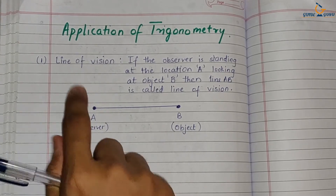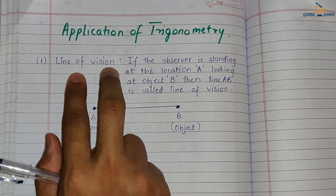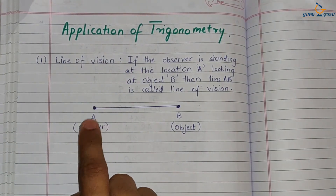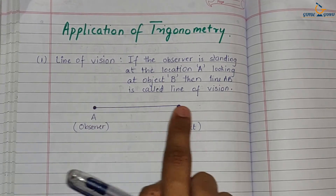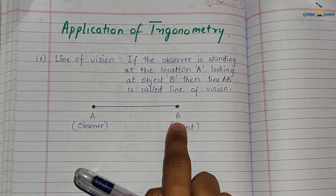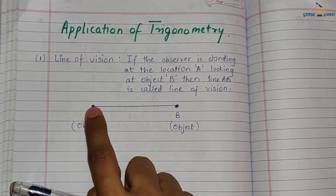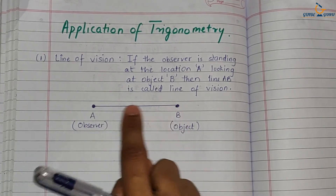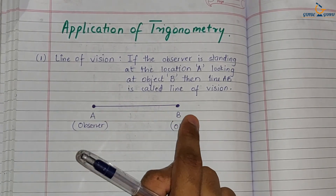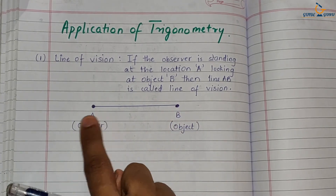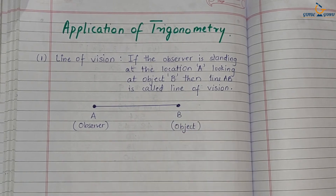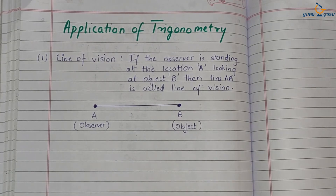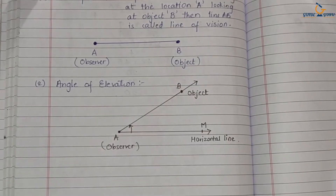The first term is the line of vision — a very simple concept. Suppose there is an observer at point A, and this observer is looking at an object present at point B. The line connecting A to B is called the line of vision. So wherever the observer looks at the object, that connecting distance is the line of vision.